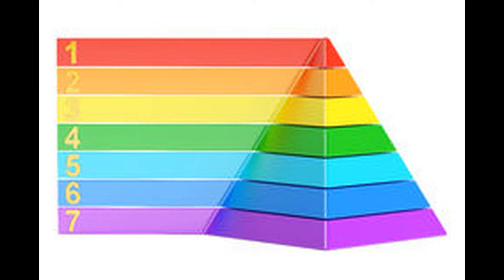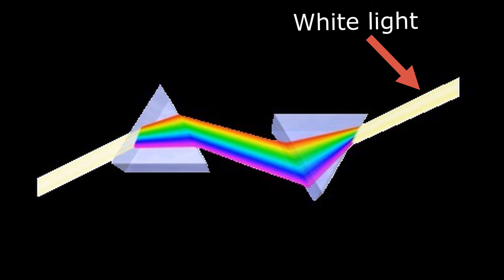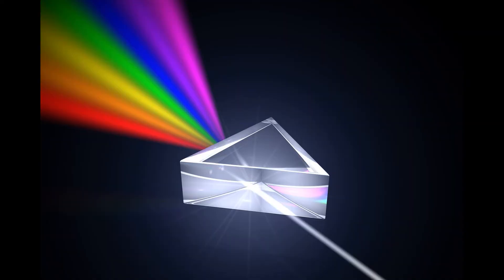Later, he did another experiment where he inverted another prism and this time he saw the seven colors merged into one color which was white. This experiment made people believe that white light consisted of seven different colors.